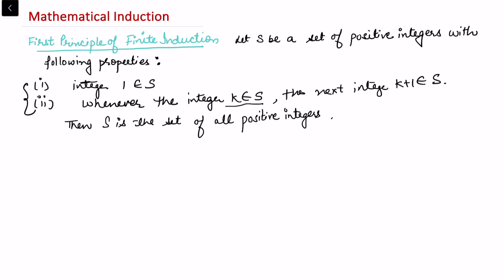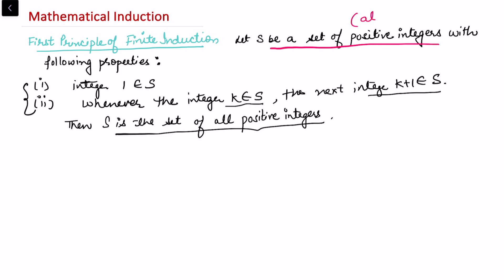So if these two properties hold — that 1 belongs to S and for k belonging to S, k plus one must belong to the set — then S is the set of all positive integers. Notice that S is initially considered a set of positive integers, not explicitly all positive integers, and what we want to prove is that it equals the set of all positive integers.